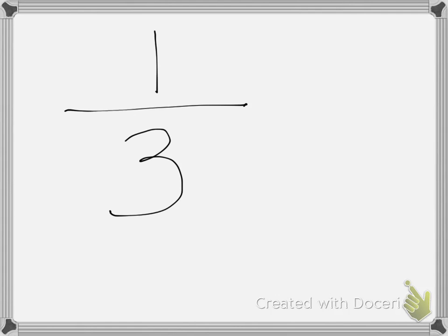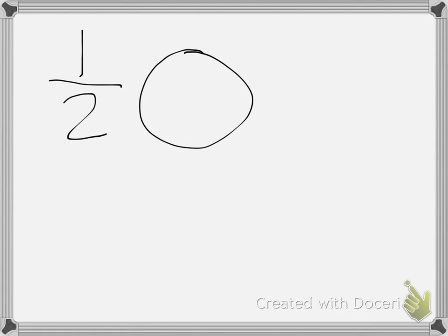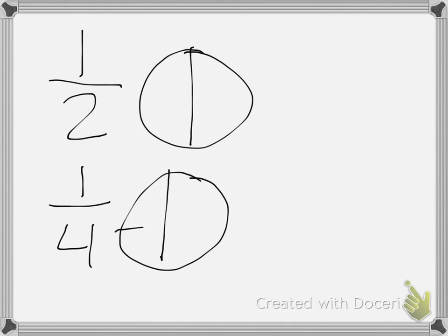We also know that when a fraction's denominator gets larger, the pieces get smaller. For example, if I have one half and one fourth, who has the bigger pieces? One half, because it's only split into the two parts.